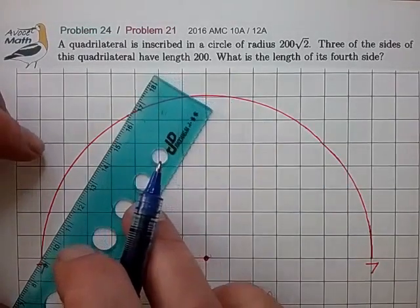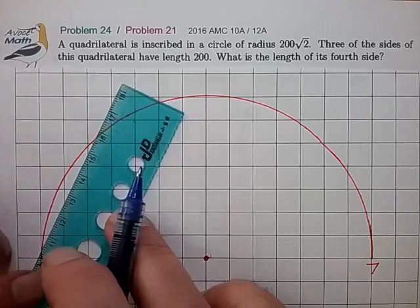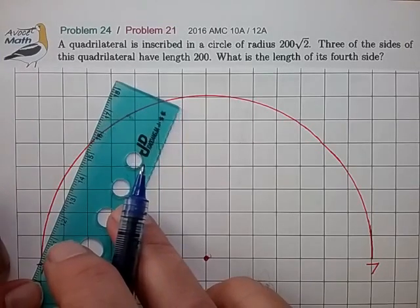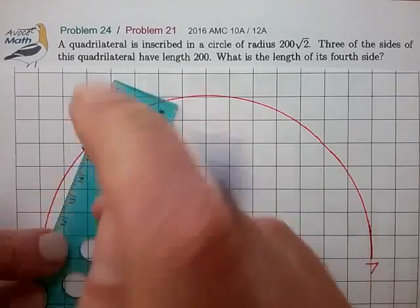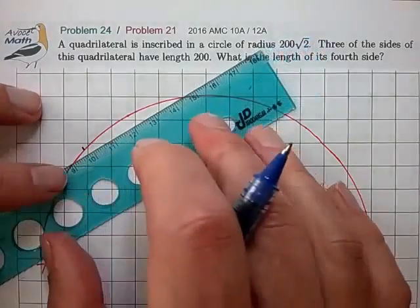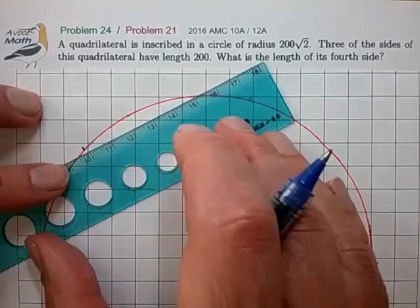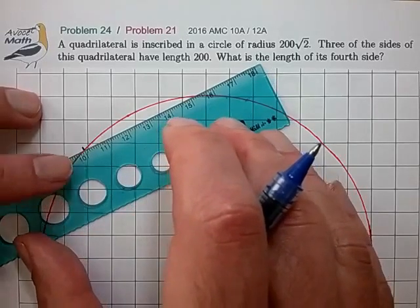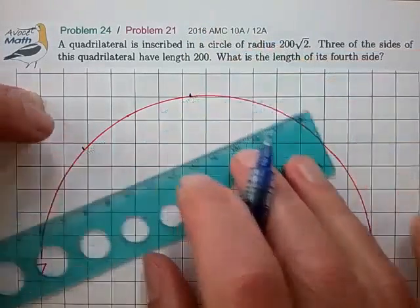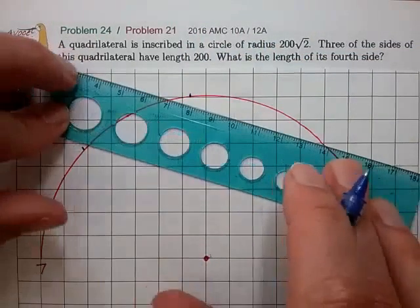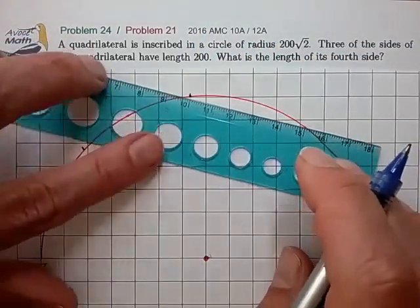So we have our first side is 5 centimeters away. Let's just make a little tick mark for that. And draw another tick mark 5 centimeters away from that first tick mark. And for the third side, we just need one more tick mark.